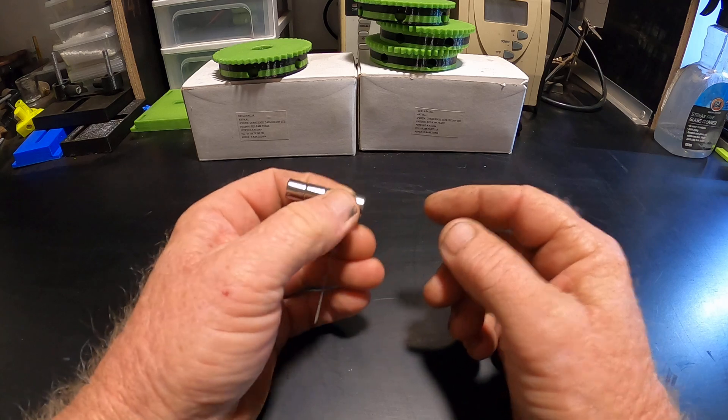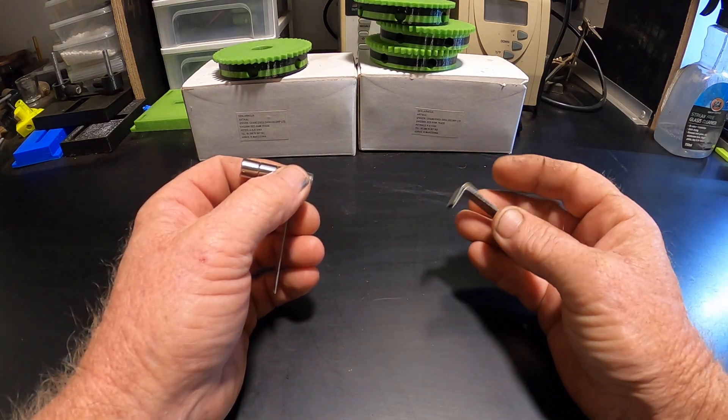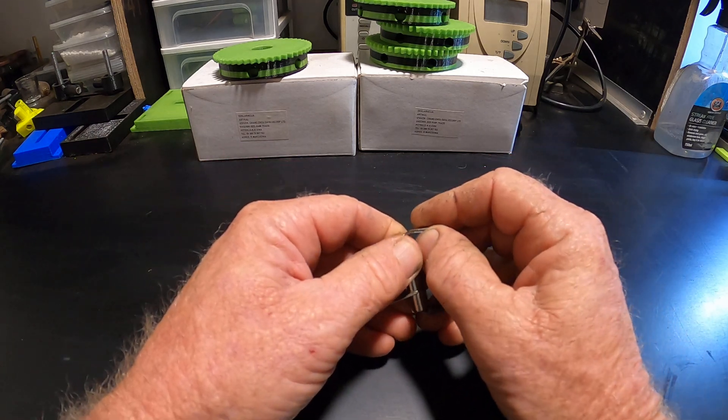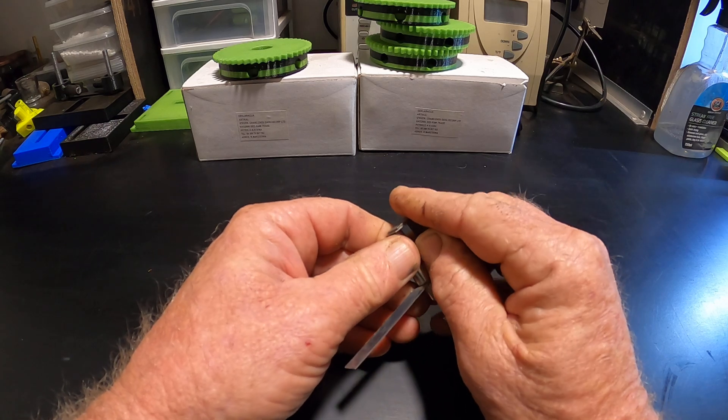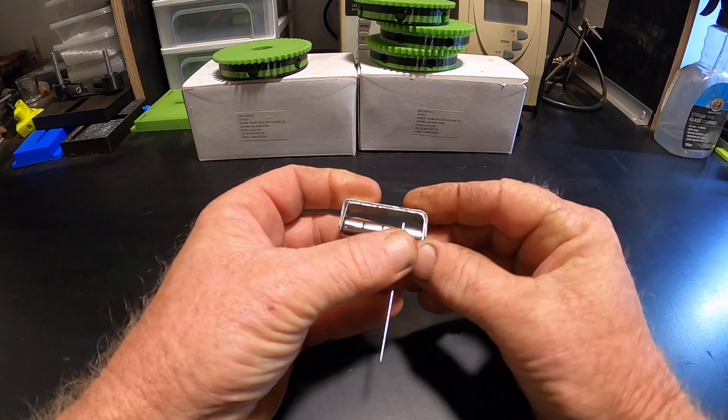So the way we do that is we take a U core or C core, whatever you want to call it, and we simply put it across our magnet like that.